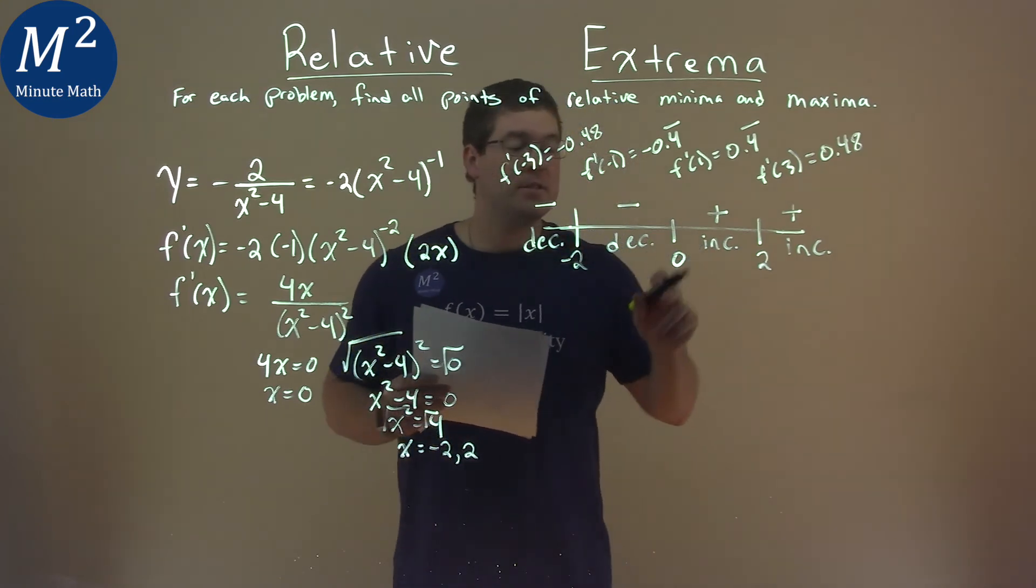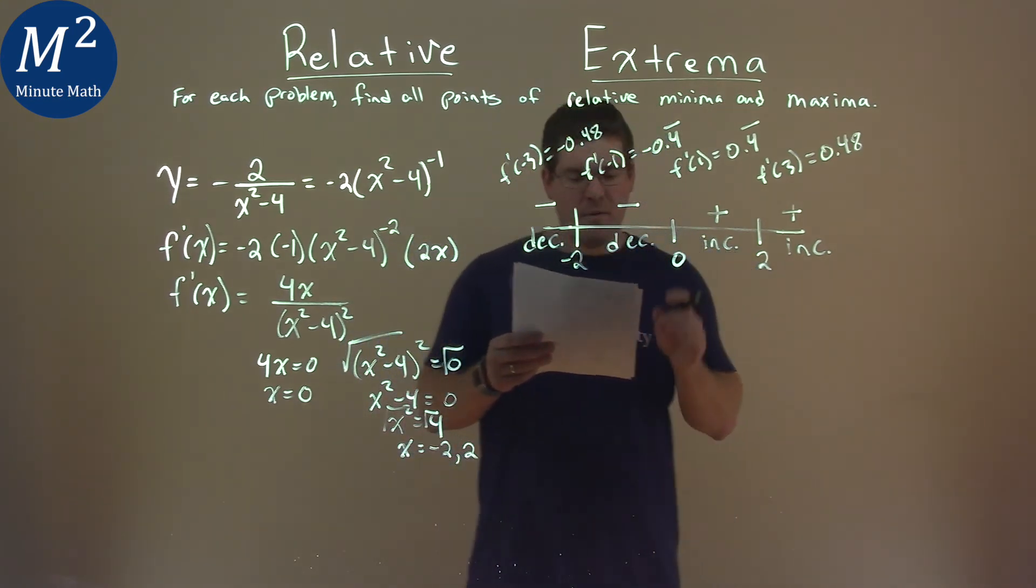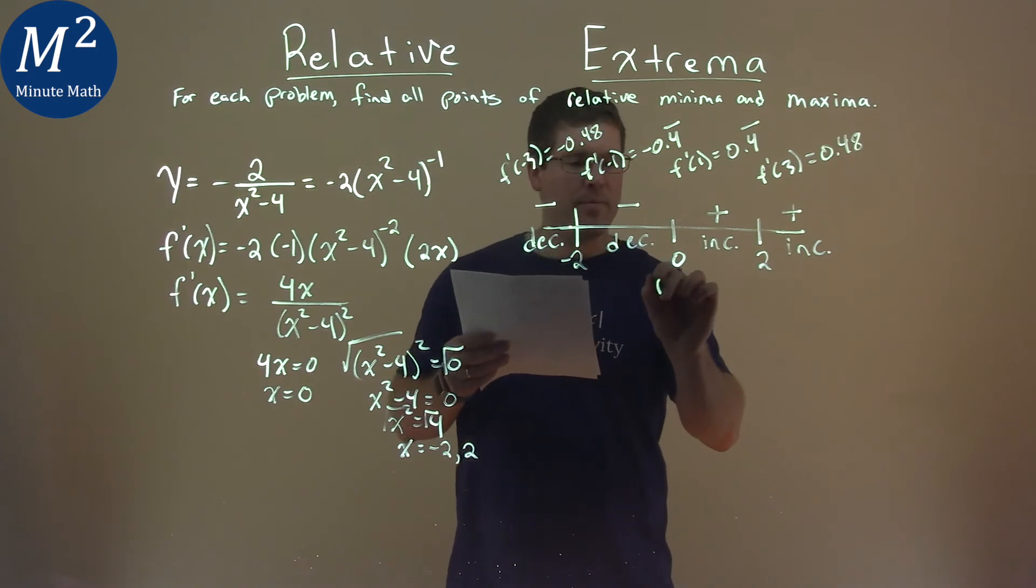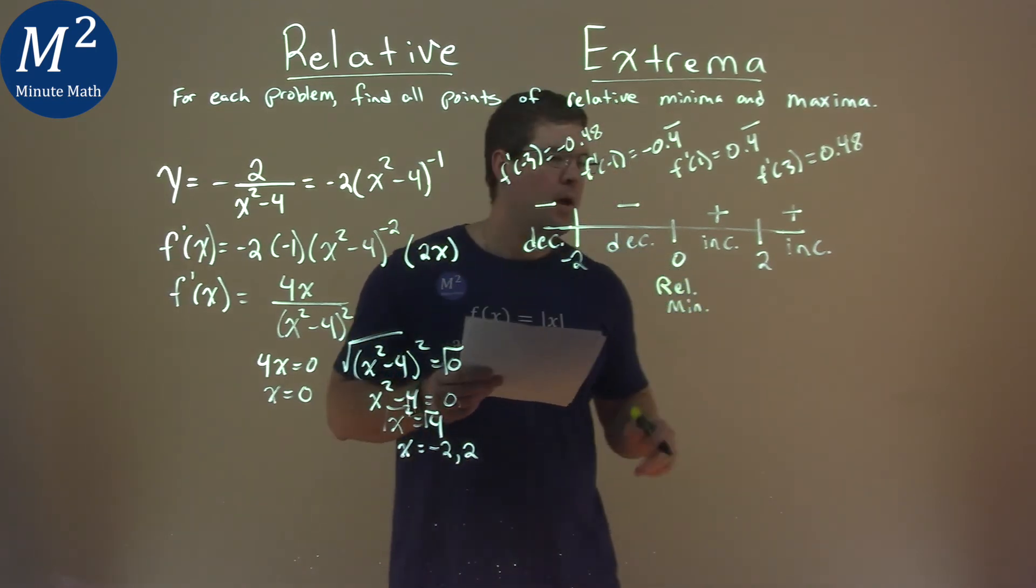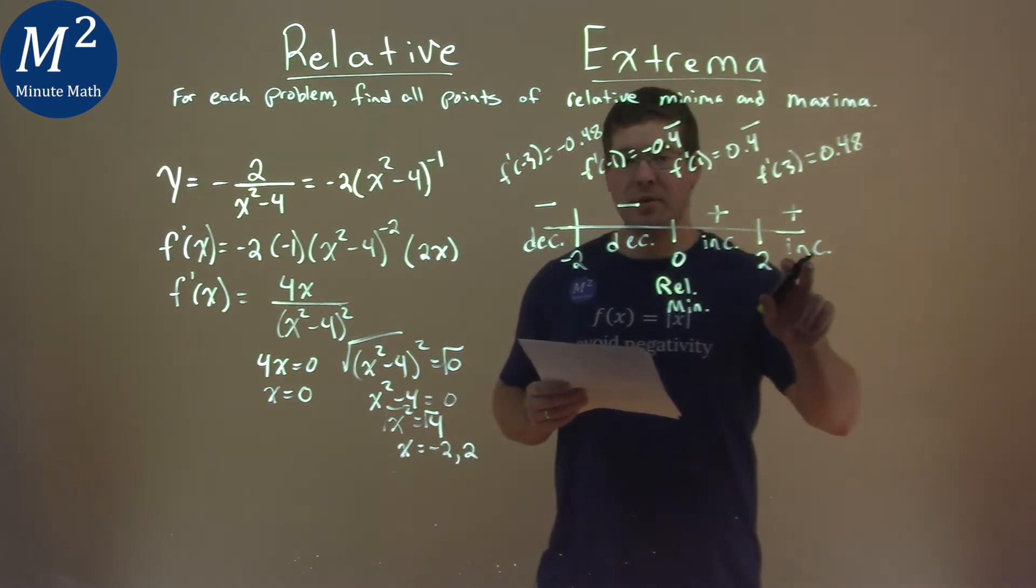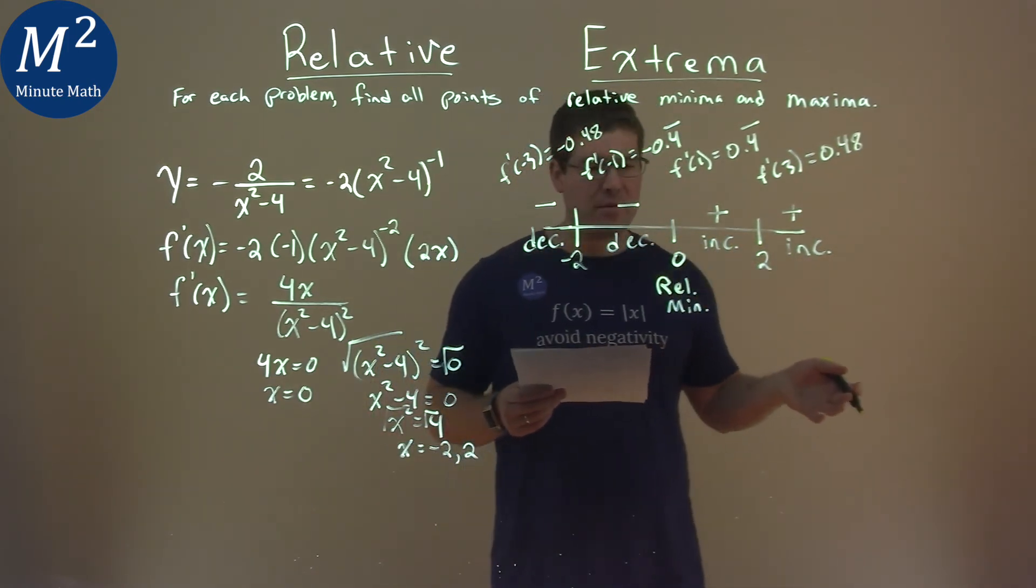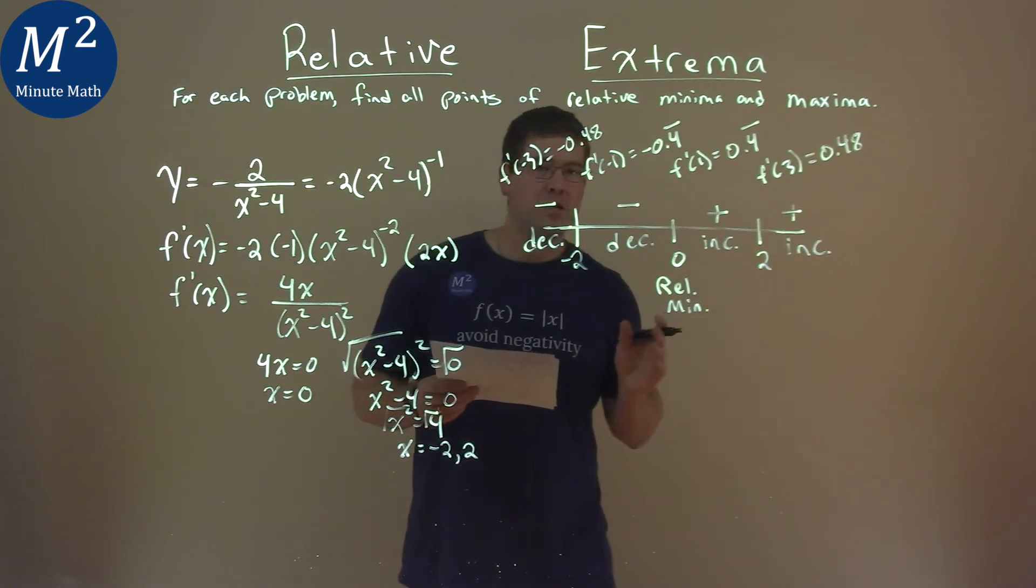From decreasing to increasing though, we go from decreasing to increasing, we have a relative minimum there. And then we keep going from increasing to increasing, there's no relative min or max there. So there's only one point where we're changing here.